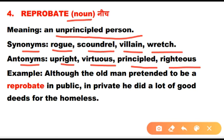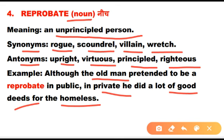Example for reprobate: Although the old man pretended to be a reprobate in public, in private he did a lot of good deeds for the homeless. He acted as a bad person in front of others, but privately helped people who had no home.